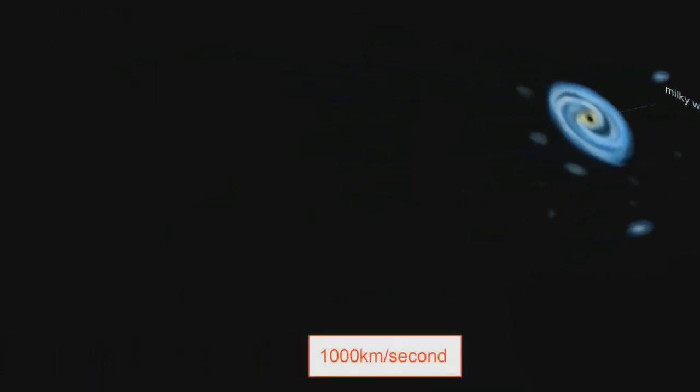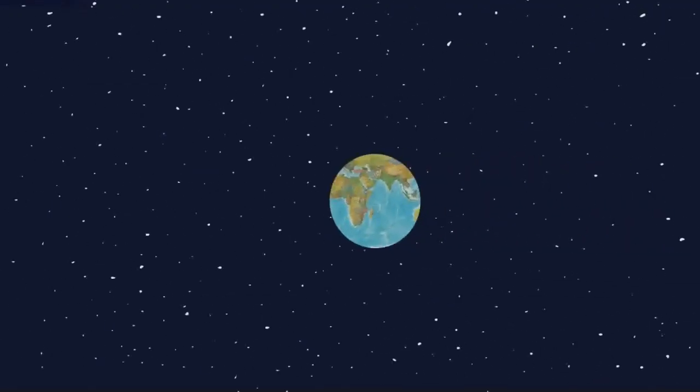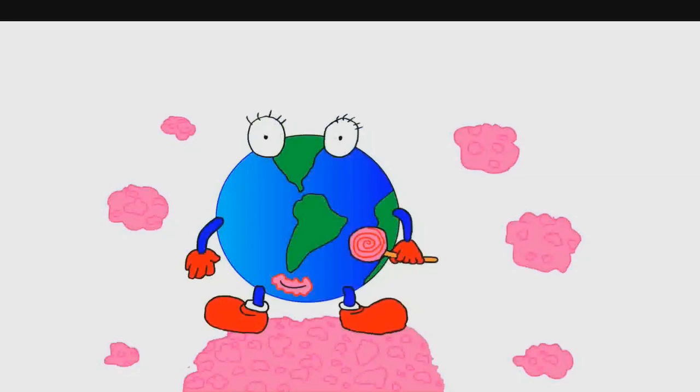On top of that, our galaxy is part of a cluster of galaxies moving together throughout space at about 1,000 kilometers per second. Earth's movement is extremely complicated, but now you know it's not as simple as a little picture explaining everything.